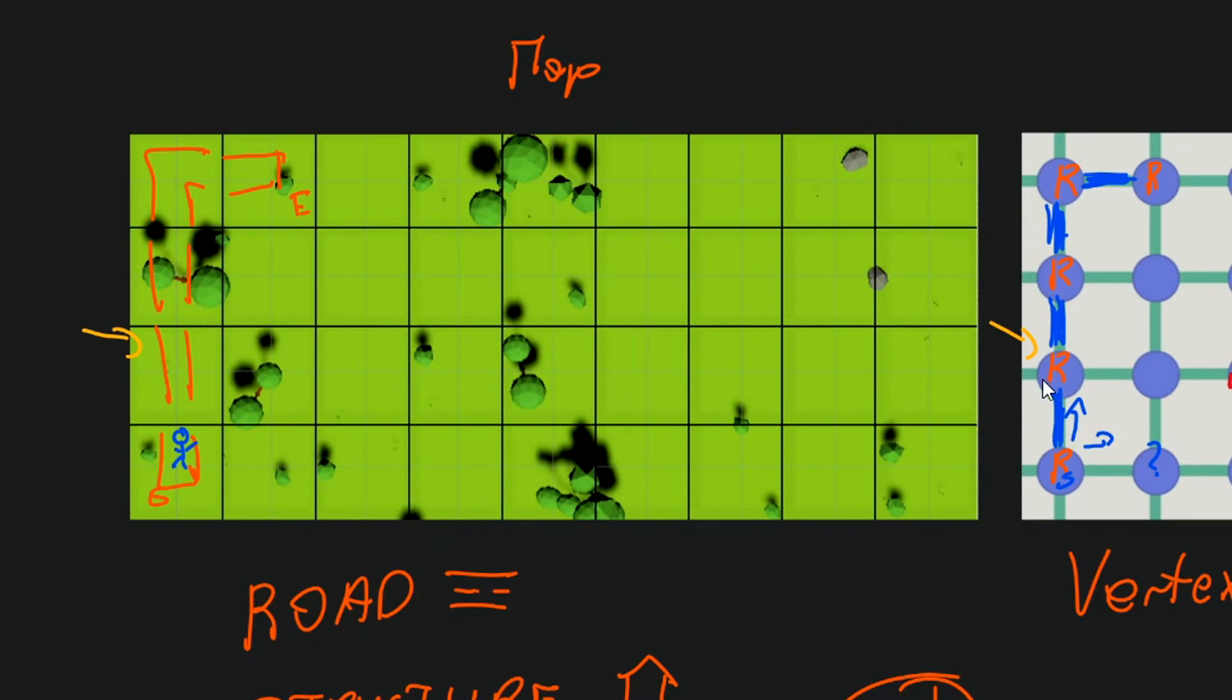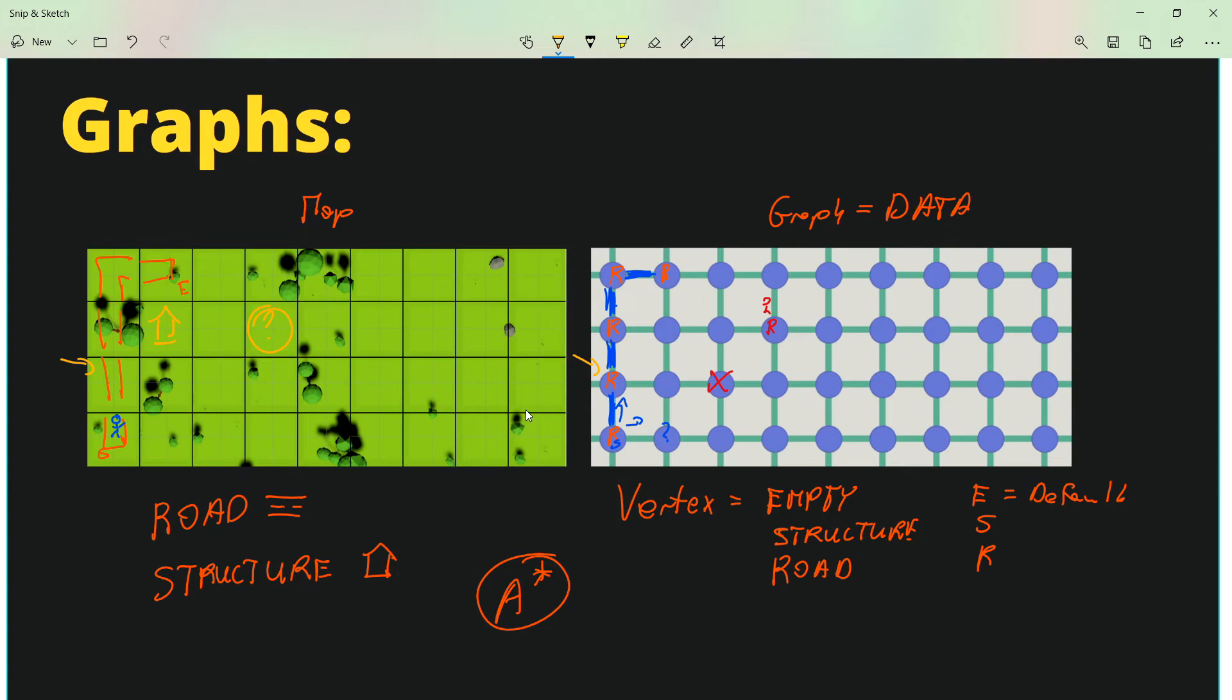Can I place a structure maybe here? No, you can't, because there is no road near this structure. So can I place structure here? Yes, you can, because there is a road as its neighbor, so the structure can be placed because each structure requires a road.